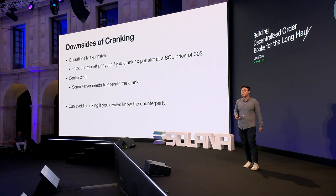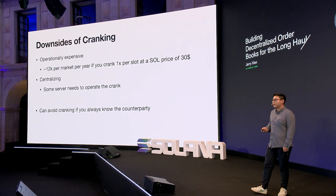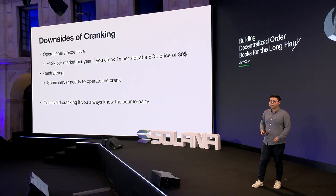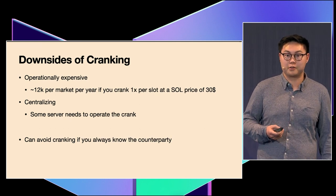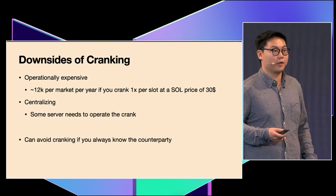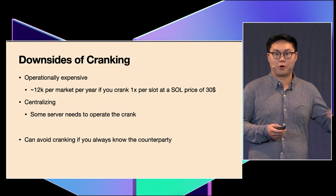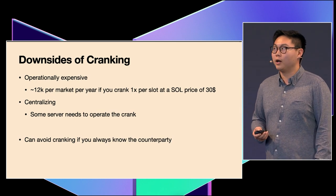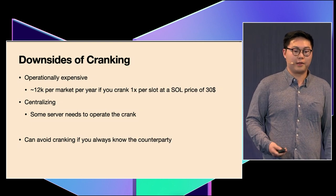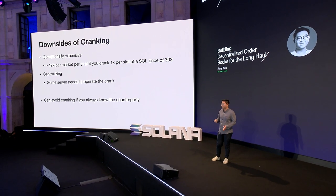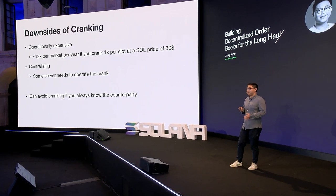But cranking also has issues. It is quite operationally expensive. If you do the math on cranking once per slot per market at a SOL price of $30 per SOL, it costs around $12,000 a year to crank a single market. If someone is operating an exchange or supporting a decentralized exchange, there must be on the order of hundreds of thousands or millions of dollars spent operationally supporting all these markets, just to run the crank. Additionally, this is quite centralizing — there must be some server that keeps turning the crank and processing trades. If there's no server to run the crank, markets will grind to a halt. The way to avoid cranking is if you always know the counterparty — there are trade-offs, but it's really important when designing order books to understand the full trade-off space.